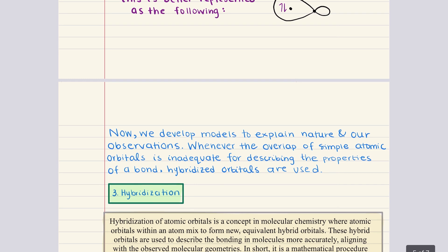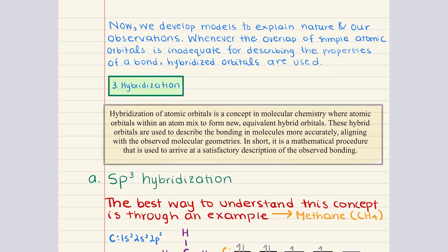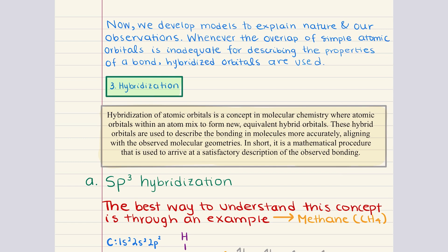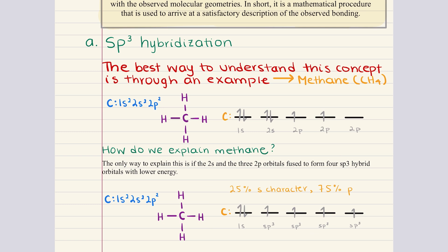Now we move into our third objective. While valence bond theory provides a useful framework for understanding covalent bonding, it sometimes fails to accurately predict molecular geometries and the equivalent nature of bonds, because it assumes bonds are formed by the overlap of unhybridized atomic orbitals. To address these discrepancies, we introduce hybridization — a theoretical model that involves the mixing of atomic orbitals to form new equivalent hybrid orbitals that can overlap to form bonds reflecting observed geometries.